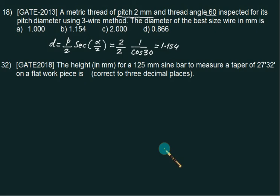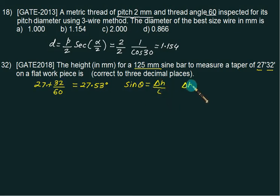This GATE 2018 question asks: The height in mm for a 125 mm sine bar to measure a taper of 27°32' on a flat work piece. The angle is in degrees and minutes, so convert: 27° plus 32 divided by 60 equals 27.53°. We want to find the height. Length is 125 mm. Sine theta = ΔH/L, so ΔH = L × sin(θ) = 125 × sin(27.53) = 57.782 mm. Straightforward question, the only problem is converting degrees and minutes.